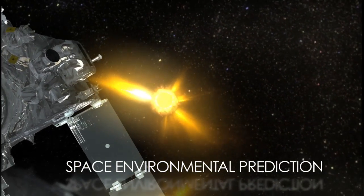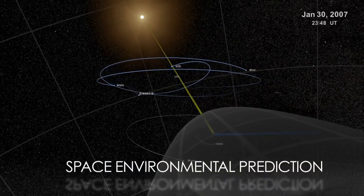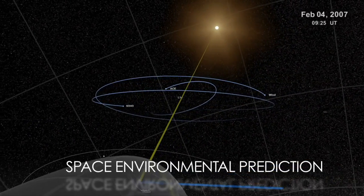In its study of heliophysics, NASA uses a fleet of satellites to take an unprecedented look at the Sun and how it affects us here on Earth.